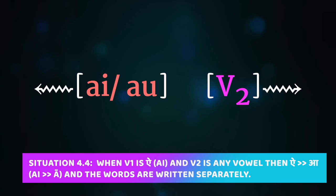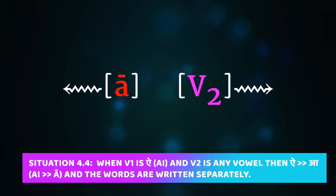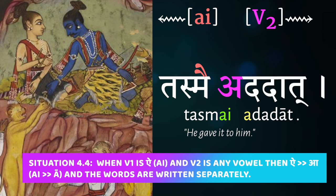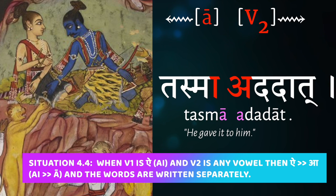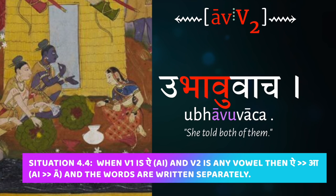Finally, the two vṛddhi vowels ai and au in V1 position: when followed by a word with any vowel as V2, a simple change occurs. Ai becomes ā and the words are written separately. Au becomes āv and the words are written together. So tasmai plus adadat becomes tasmā adadat, meaning 'he gave it to him.' Ubhau plus uvāca becomes ubhāvuvāca, meaning 'she told both of them.' Notice that with au the words are written together, while with ai they are written apart.